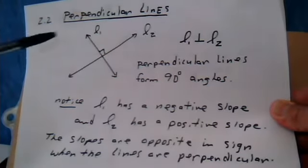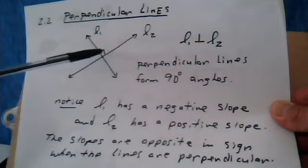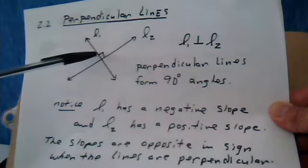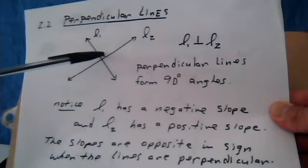Perpendicular lines. Perpendicular lines always form a 90-degree angle. This is a symbol for 90 degrees, it's the square. When you see this symbol, that means that's 90 degrees.